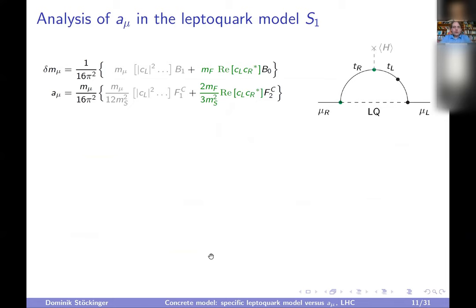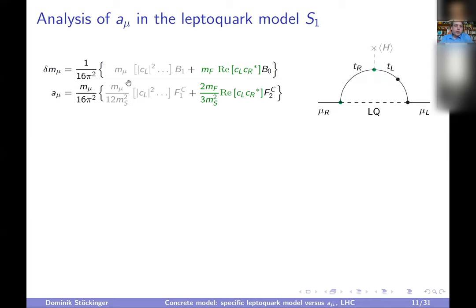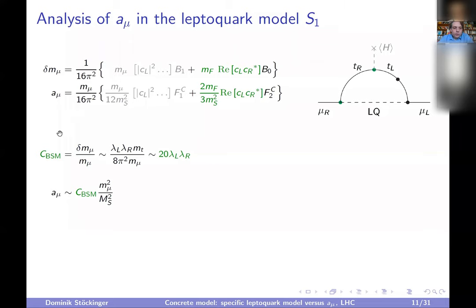Analyzing g-2 the same way as before: with both left and right-handed couplings, the dominant term is the left times right coupling term, enhanced by the new fermion mass — in this case the top quark mass. The C_BSM quantity is the product lambda_L times lambda_R times the top mass divided by 8 pi squared, normalized by the muon mass. Working out the factors gives C_BSM equals 20 times lambda_L times lambda_R. This means C_BSM can easily be of order one or even bigger — a huge enhancement factor.